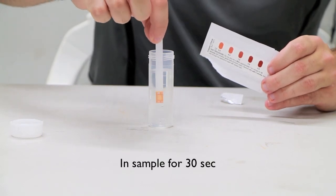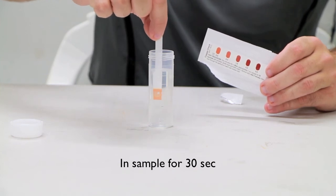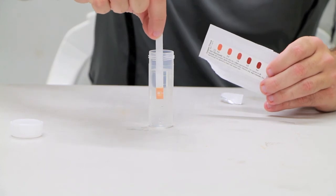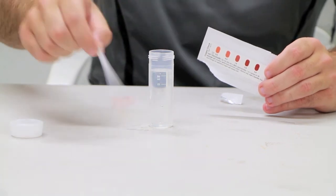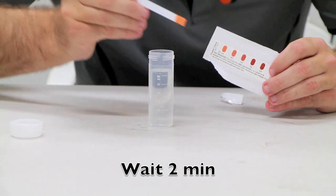Remove the strip from the foil and place the strip into water, moving it back and forth for 30 seconds. After 30 seconds, remove the strip from the sample and wait 2 minutes.